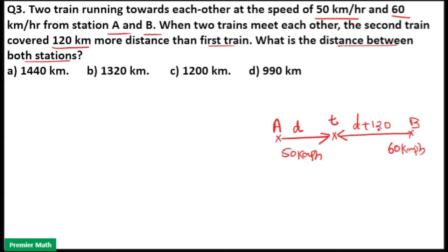So that means there is a difference of 120 km. That means 60 times the time taken to meet equals D plus 120. And 50 times the time taken equals D. So 60T minus 50T equals D plus 120 minus D, that is 120 km. The difference in distance is 120 km.